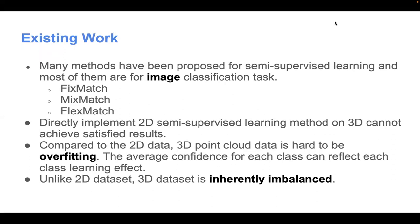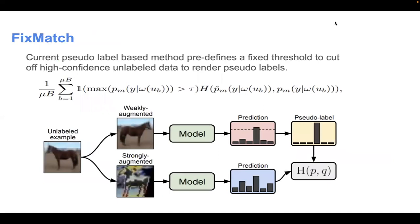Besides, compared to the 2D data, 3D point cloud data is hard to be overfitting. Finally, unlike 2D dataset, 3D dataset is inherently imbalanced.